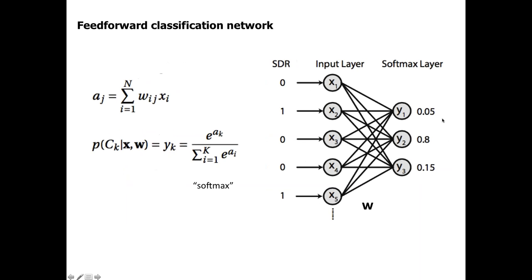A feed-forward classification network is just like that. Each unit first takes a weighted linear summation of all the inputs. The weight matrix W is the only set of parameters in the model. Because it's a distribution, there is an additional nonlinearity called the softmax to make sure the prediction probabilities sum to one. It takes the exponential of each input divided by the sum of all others — a normalization step. This is the only difference from a standard perceptron or artificial neural network, and softmax is a well-known function.